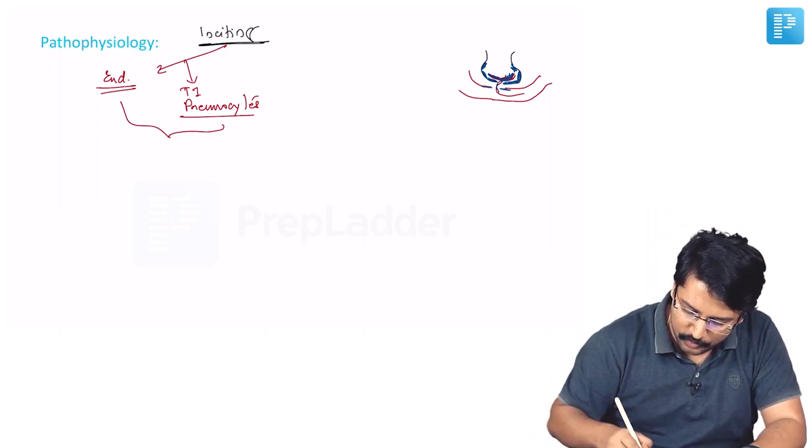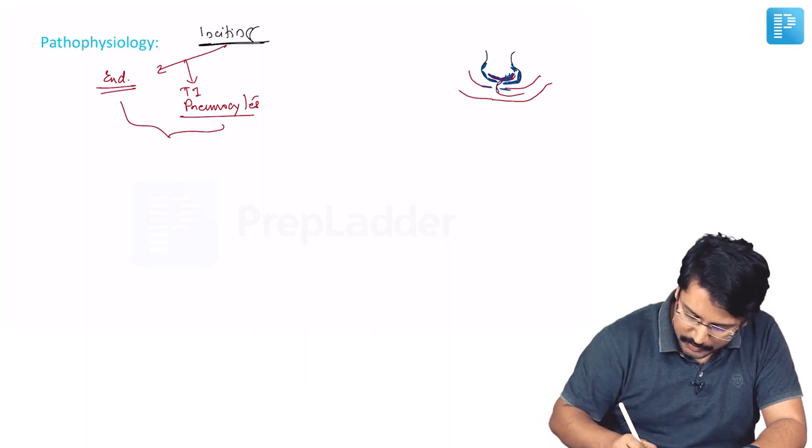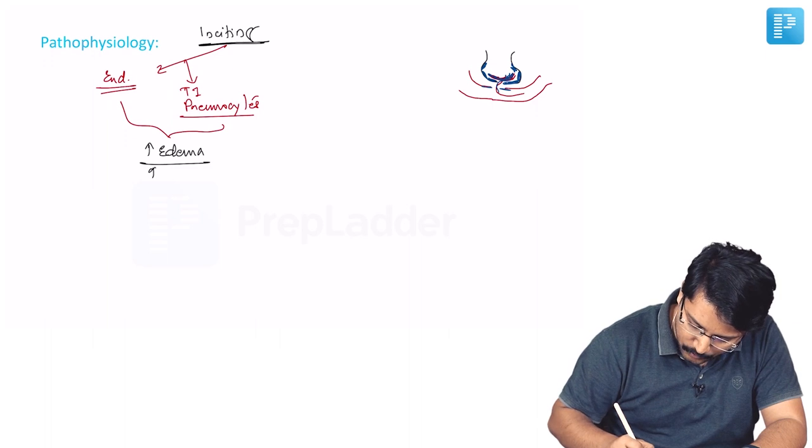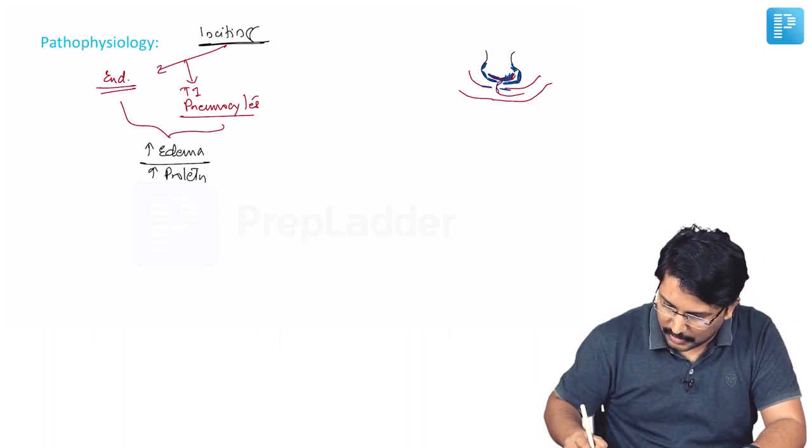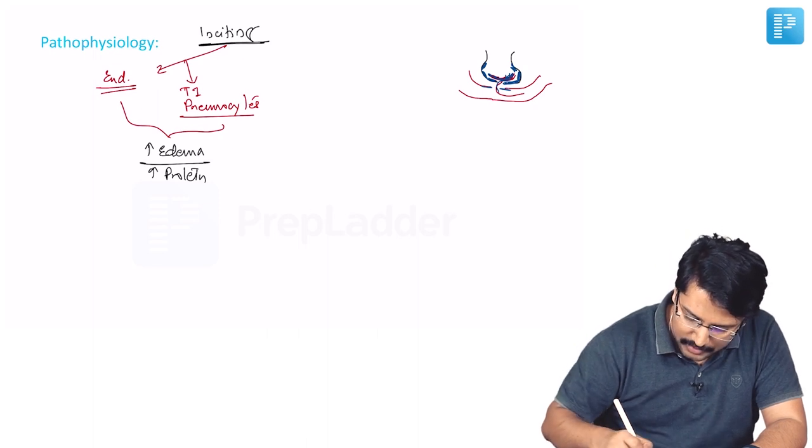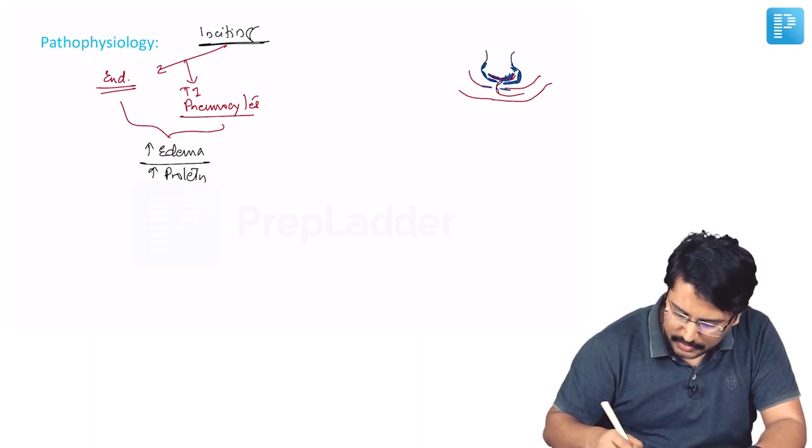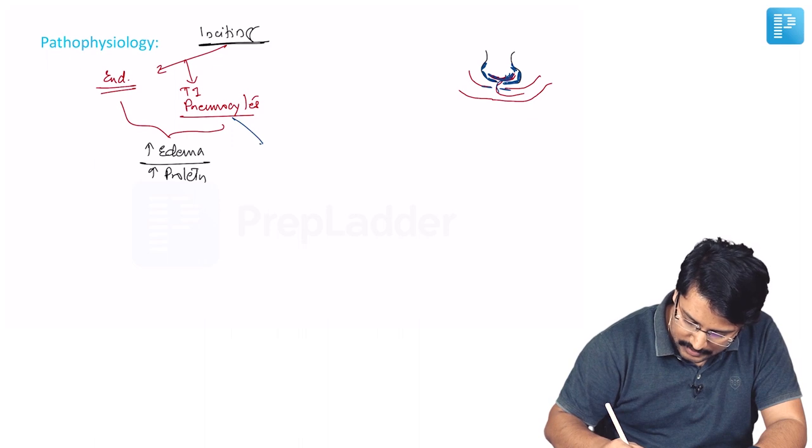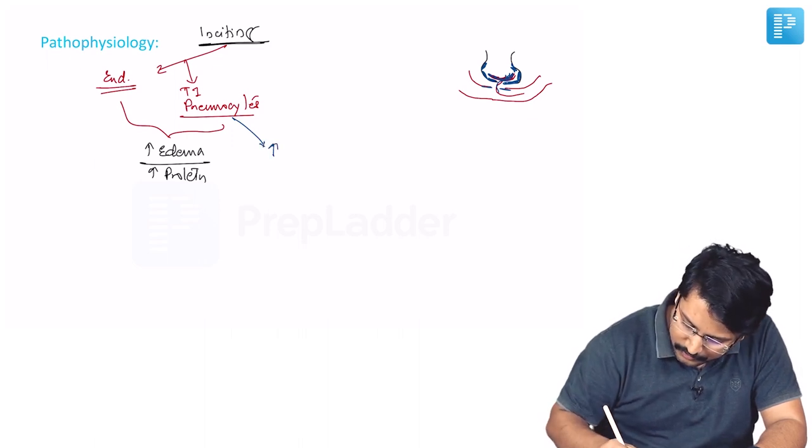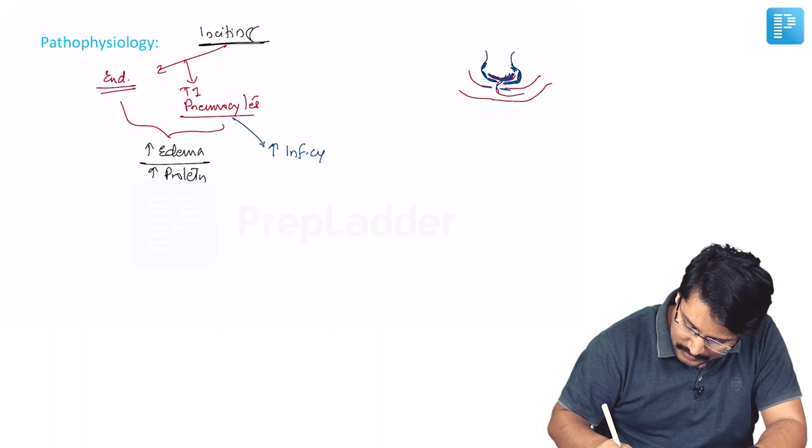There is protein-rich fluid accumulating in the alveolar spaces. So there is alveolar edema which is rich in proteins. This is one important change that is happening. Apart from that, the injury to type 1 pneumocytes as well as endothelial cells also causes a second important change: it increases the production of inflammatory cytokines.